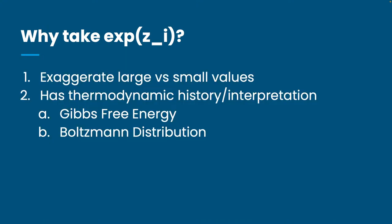There's also a historical reason for the exponential: this area of machine learning came from thermodynamics. Gibbs free energy and the Boltzmann distribution in thermodynamics are very similar and can be used to derive the softmax function — so it has a thermodynamic interpretation. But you don't need to know thermodynamics to do machine learning.